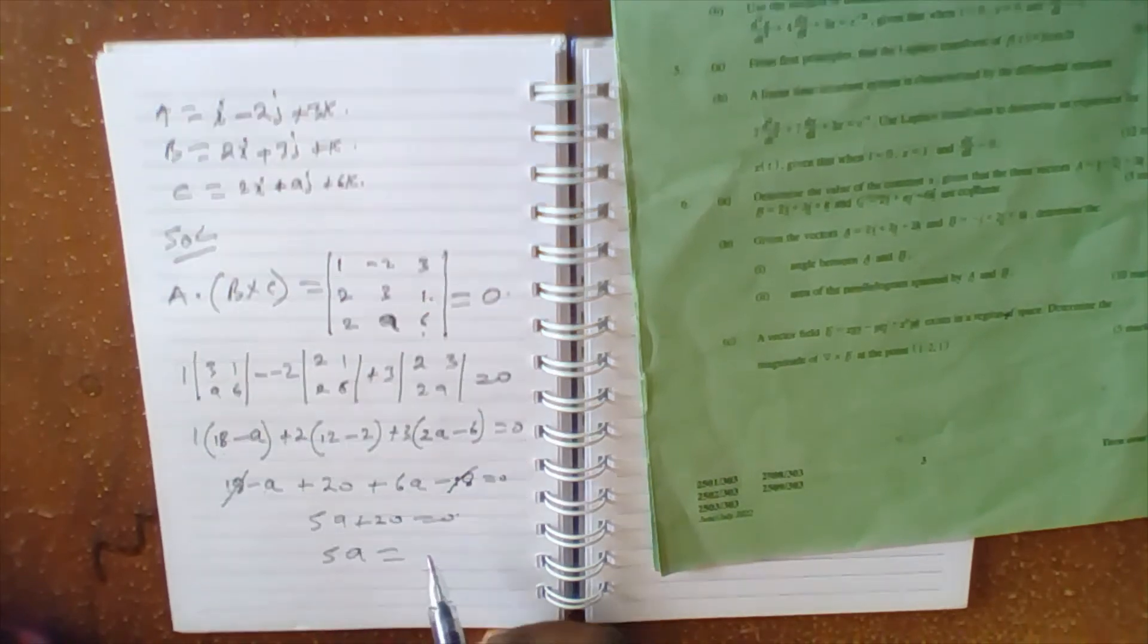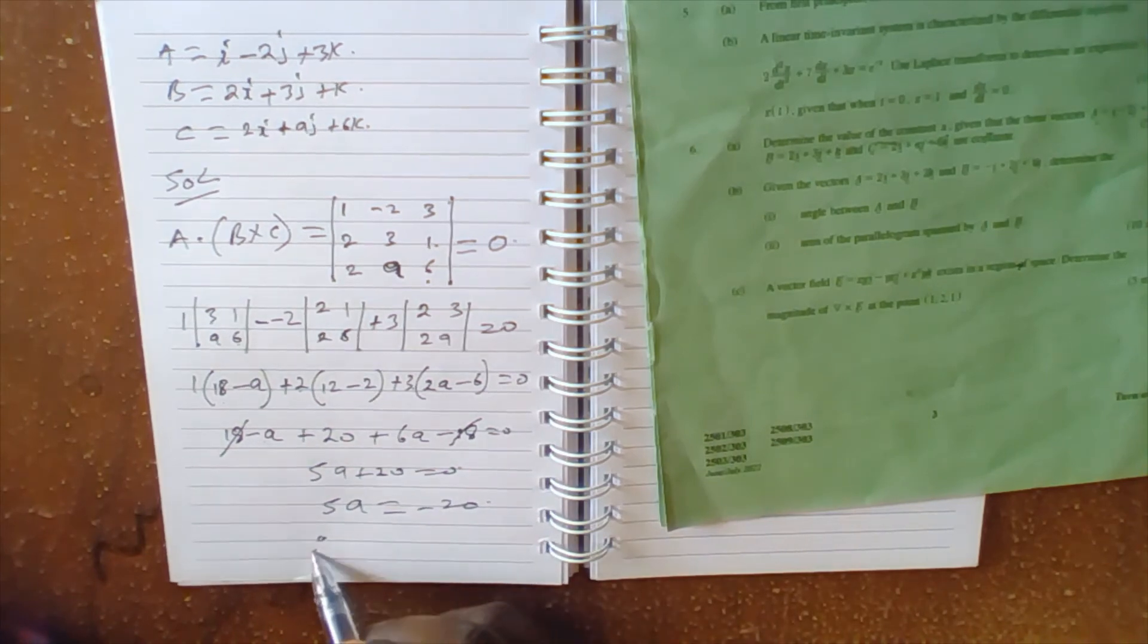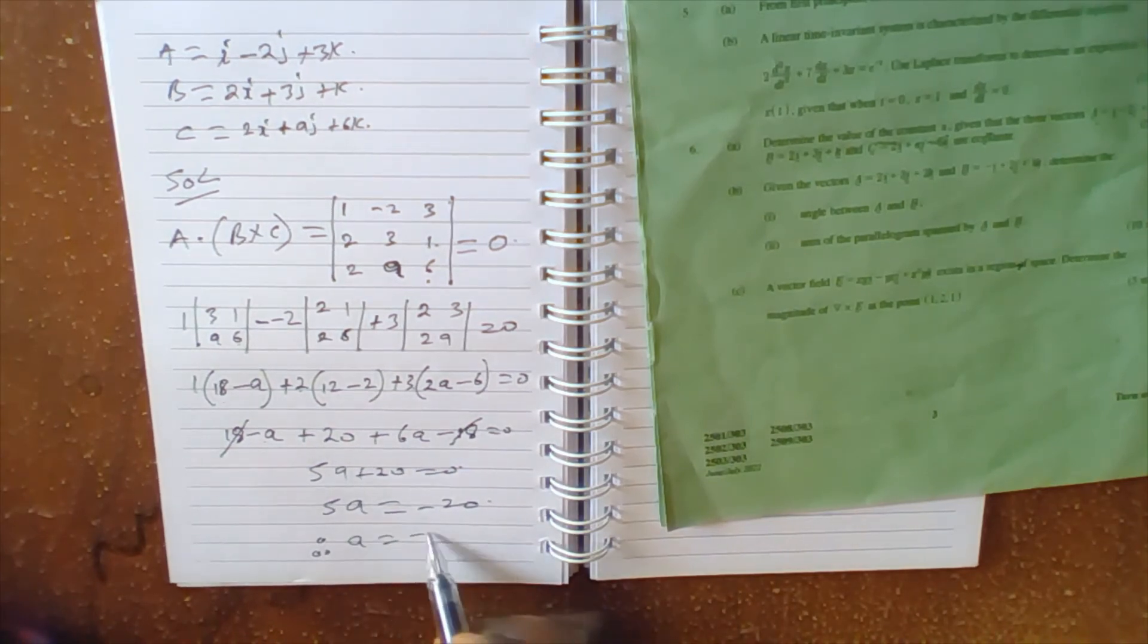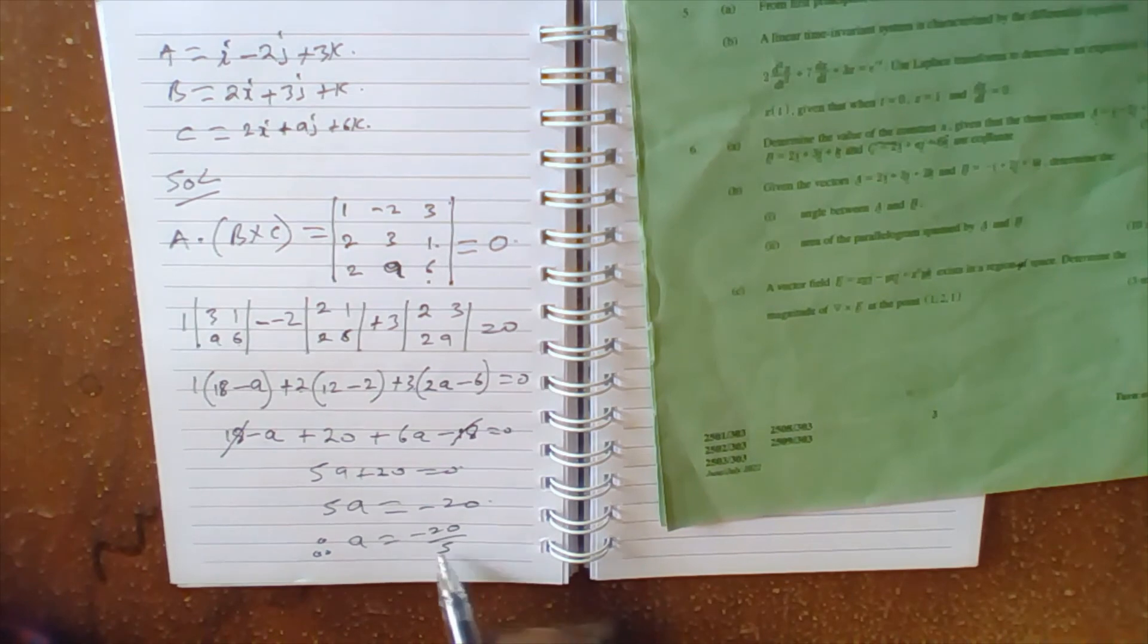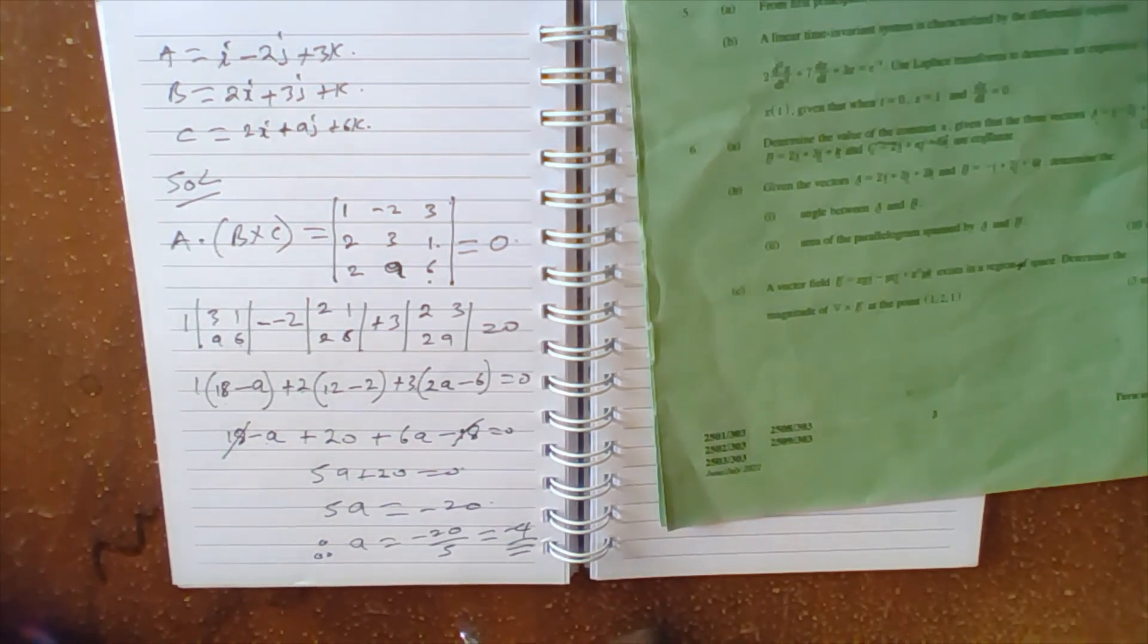5a equals to negative 20. Therefore, a equals to minus 20 over 5, which equals to negative 4. Thank you for watching and listening.